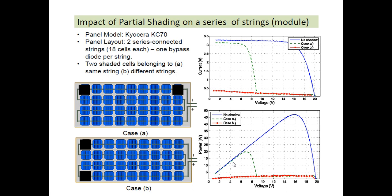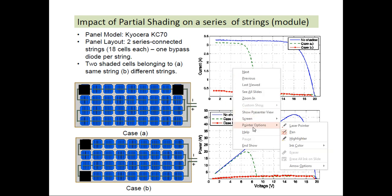This is the impact of shading on a series string — a particular module. Considering the panel model Kyocera KC70, the panel layout is two series-connected strings of 18 cells each, with one bypass diode per string. If we consider two shaded cells belonging to the same string (Case A) and to different strings (Case B), this shows the modification in the characteristics of that particular module.